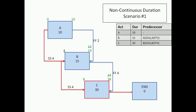Here we have 4 and a lag of 4 that goes to 8 for the early start, and 8 plus 30 gives 38 as the early finish. Here we have 19 plus 4 as 23, and obviously 38 controls. So we go with the end as 38.